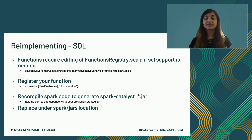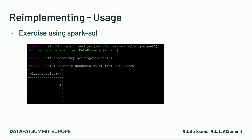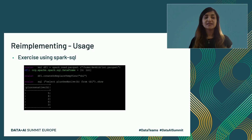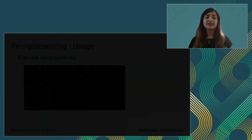Once we've added to the functions registry, I can go back to my Spark shell and execute a query that uses the plus one native function. I'm trying to do a select plus one native from a table, and I get the results. Spark was able to actually recognize plus one native as an existing function and give me the results.